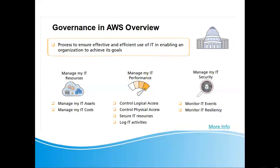We can see our governance has two categories. We manage IT resources with a lot of performance. We control physical access, VPC and IAM. We use encryption and control KMS. We control management IT security — GuardDuty, WAF, etc. — and the security of the application.